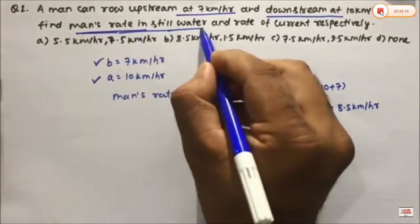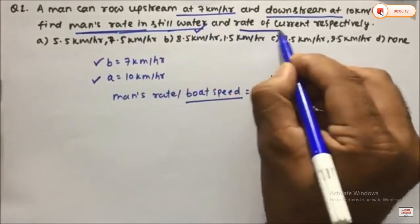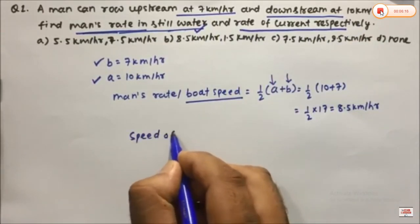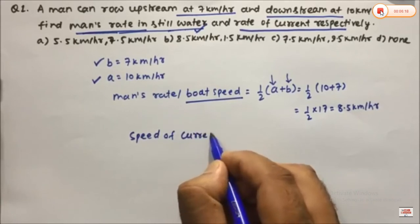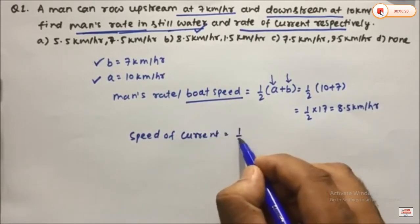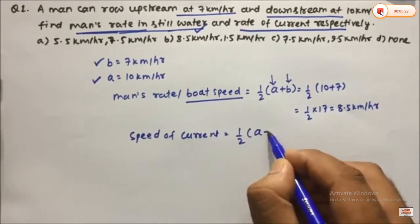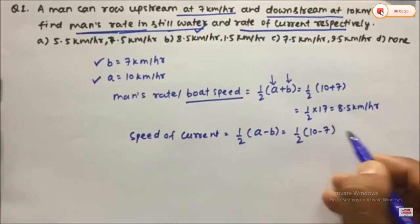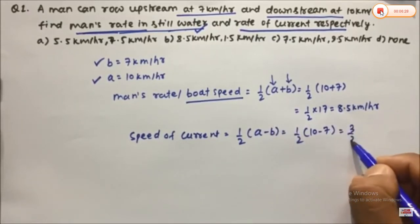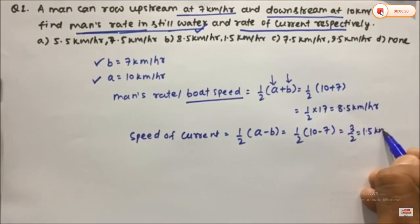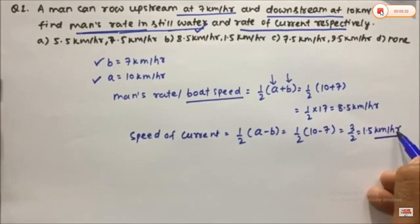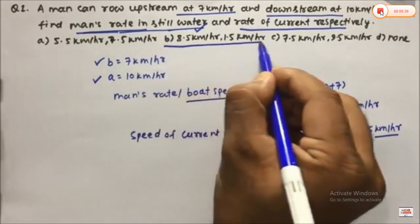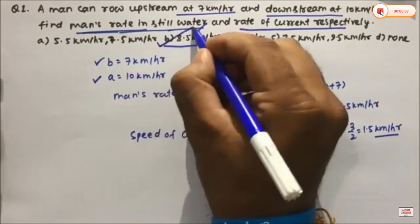Now finding the rate of current: speed of current equals one-half into (A minus B) = one-half into (10 minus 7) = 3 divided by 2 = 1.5 km/h. So the correct answer is option B for this question.